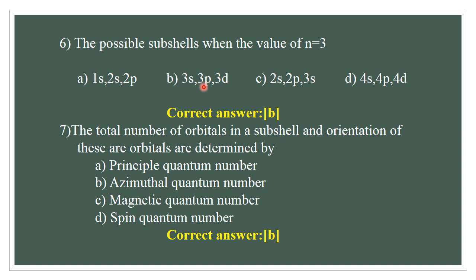The total number of orbitals in a subcell and the orientation of these orbitals are determined by the azimuthal quantum number. Options: A) Principal quantum number, B) Azimuthal quantum number, C) Magnetic quantum number, D) Spin quantum number. The correct answer is B.